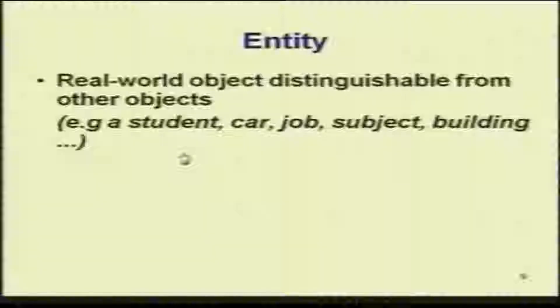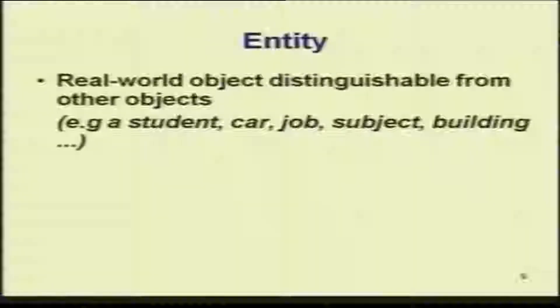An entity is a real world object distinguishable from other objects. Examples: a student is an entity, a car is an entity, a job is an entity, a subject is an entity, a building is an entity.